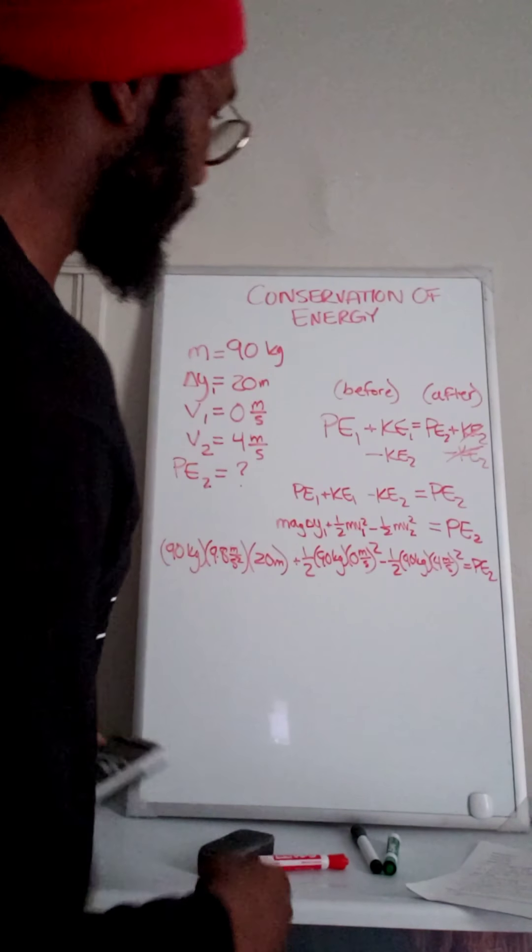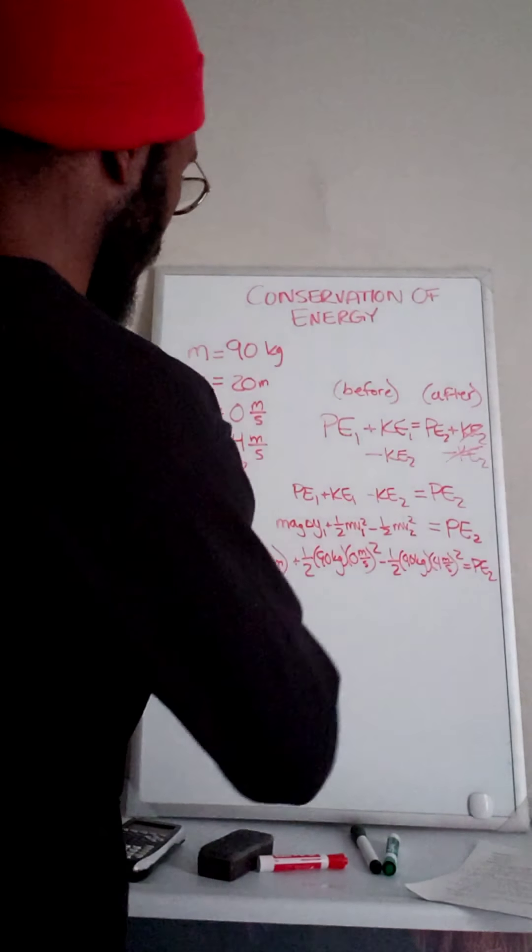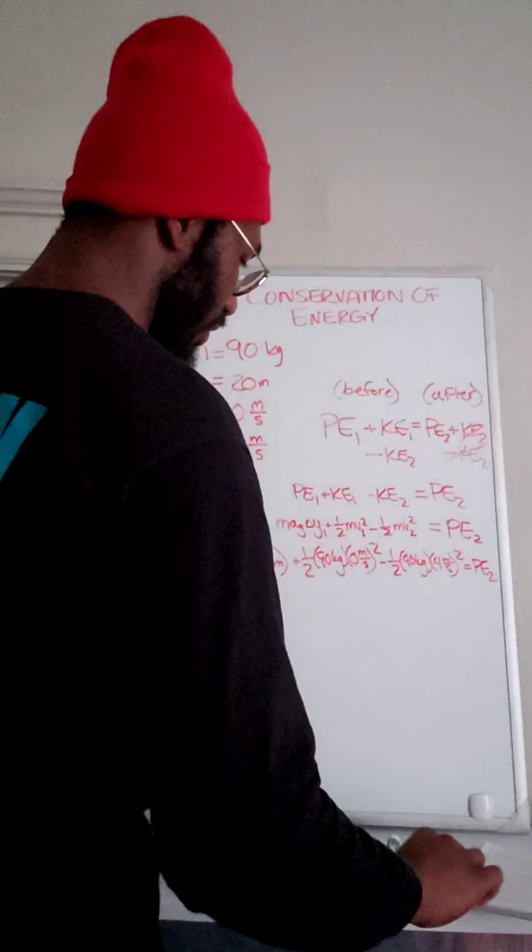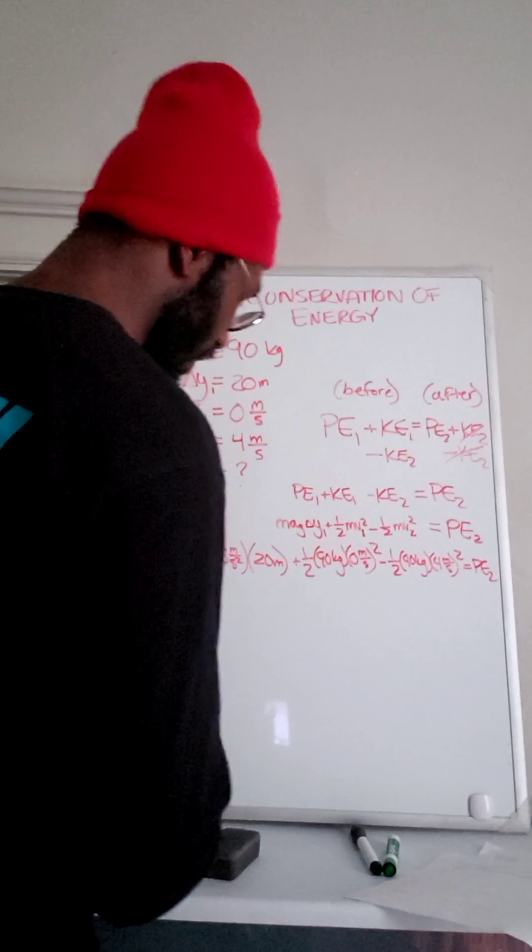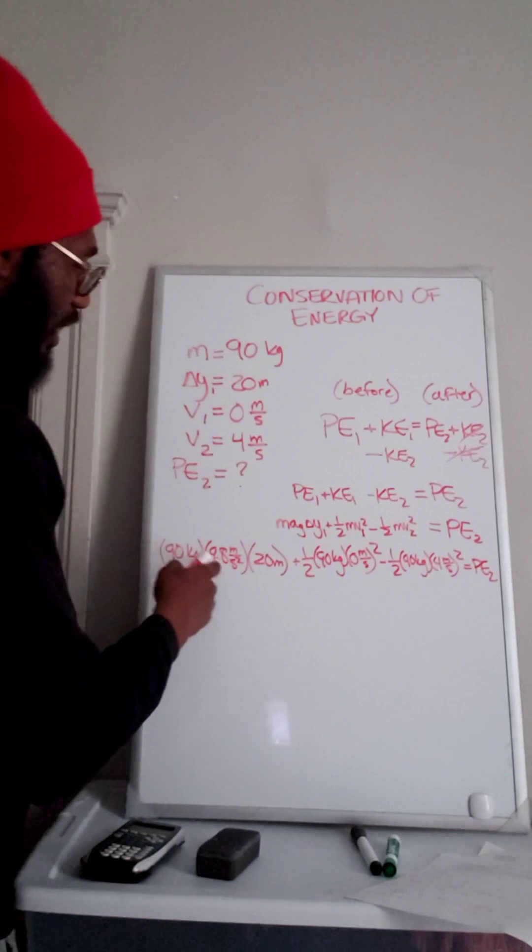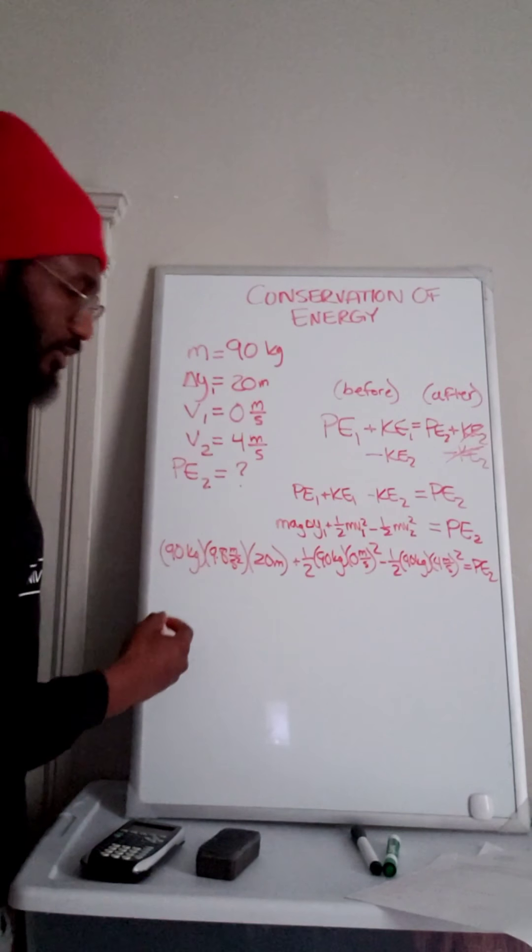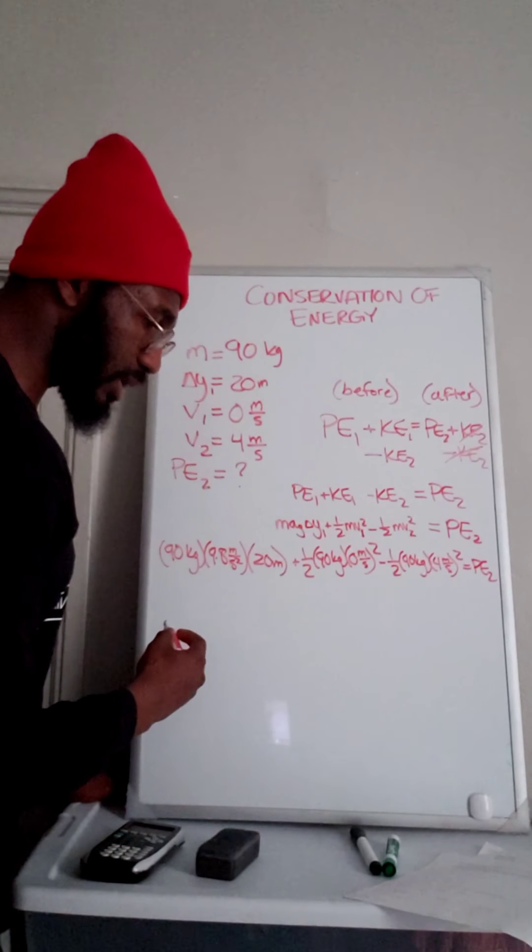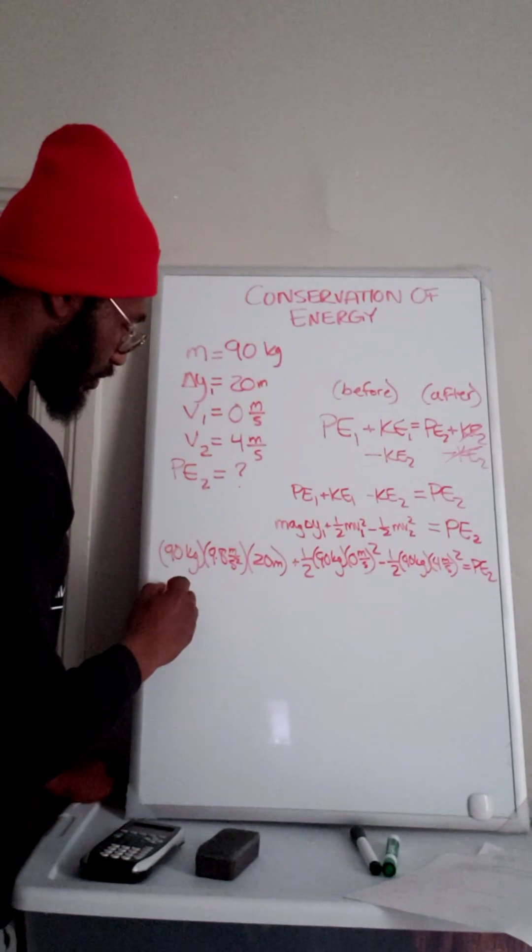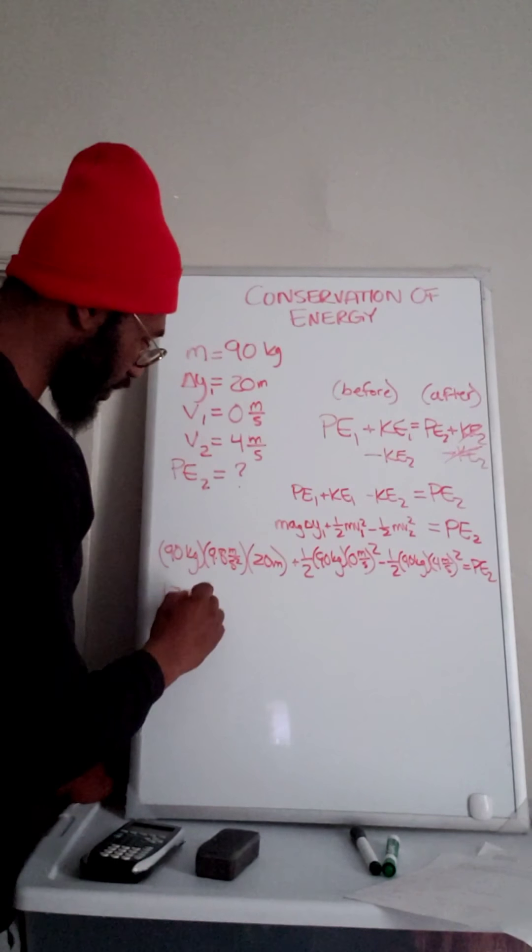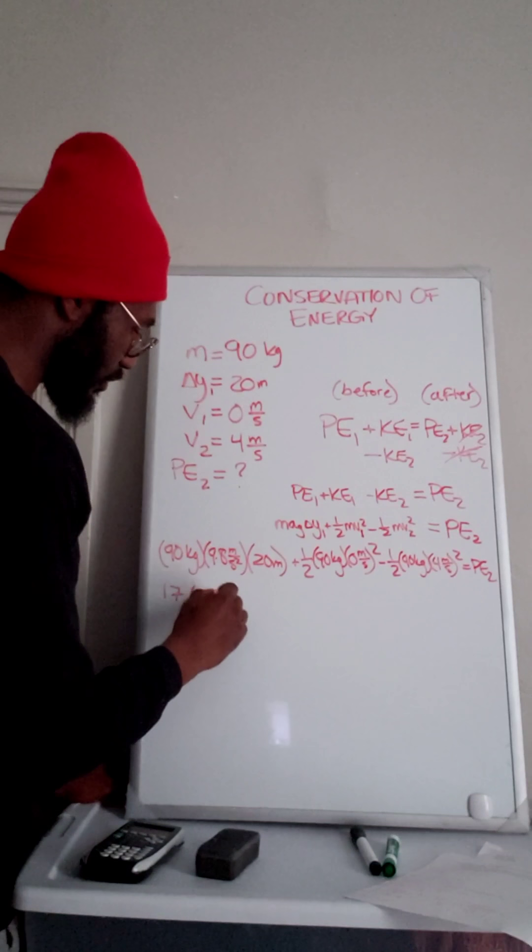So we have all of our numbers written out, and we can begin to calculate these individual quantities. So we've got 90 times 9.8 times 20. 90 times 9.8 times 20 is going to give us 17,640.